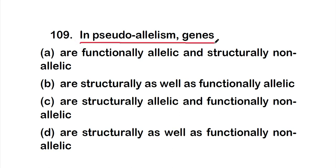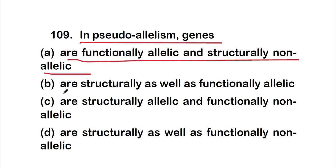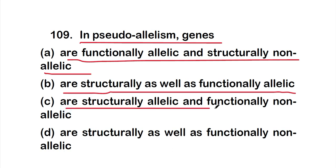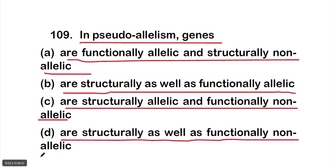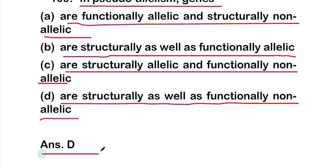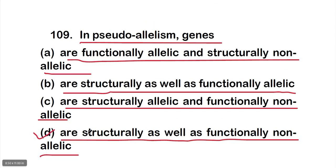Question 109: in pseudoallelism, genes are Option A functionally allelic and structurally non-allelic, Option B structurally as well as functionally allelic, Option C structurally allelic and functionally non-allelic, or Option D structurally as well as functionally non-allelic. The right answer is Option D — in pseudoallelism, genes are structurally as well as functionally non-allelic.